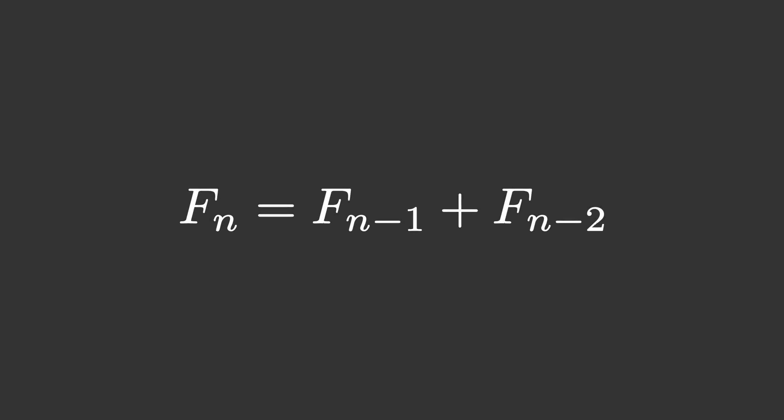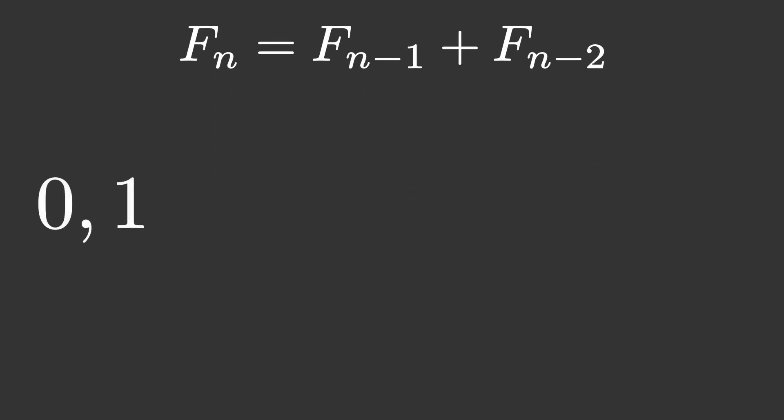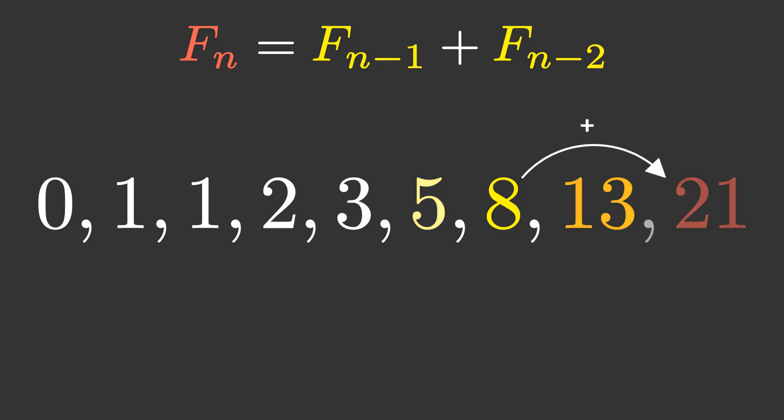This is the definition of the Fibonacci sequence: f(n) equals f(n-1) plus f(n-2), or more understandably, every term is the sum of the previous two terms. Starting with f(0) equals 0 and f(1) equals 1, this produces the recognizable sequence you see on the screen.